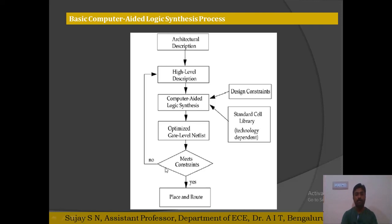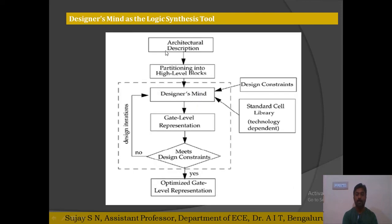We check whether the netlist meets the constraints. If it fails, we change the RTL description itself. In the manual mode, however, the designer has to rethink for the same RTL, write the gate level representation, and again check whether it meets the constraints. If yes, that is the optimized representation. If no, the designer does not change the RTL — only the gate level representation — and repeats the process.